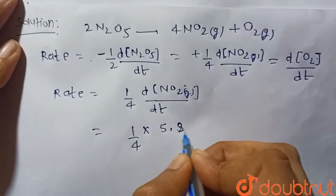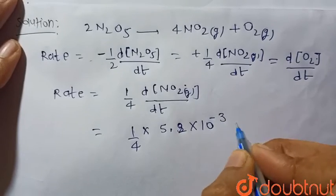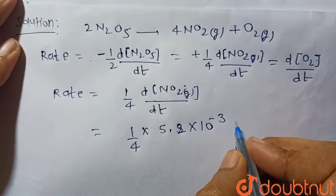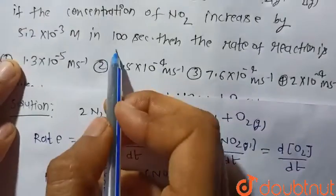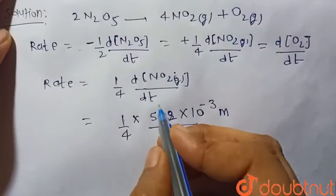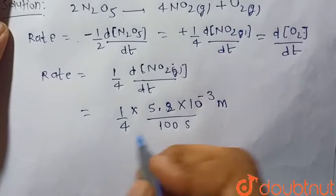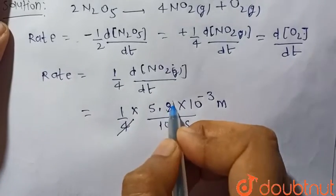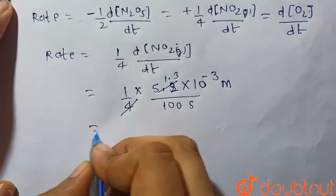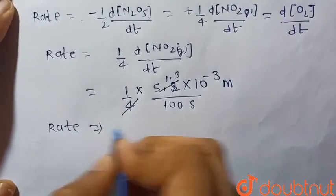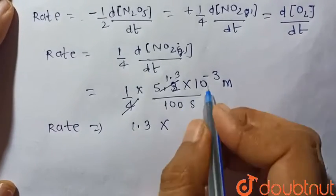This is the change in concentration of NO2, so this will be 5.2×10^-3 molar in 100 seconds. So here dt is 100 seconds. So it will be 1.3, and the rate will become 1.3×10... when this 100 goes to the numerator, it becomes 10^-5.